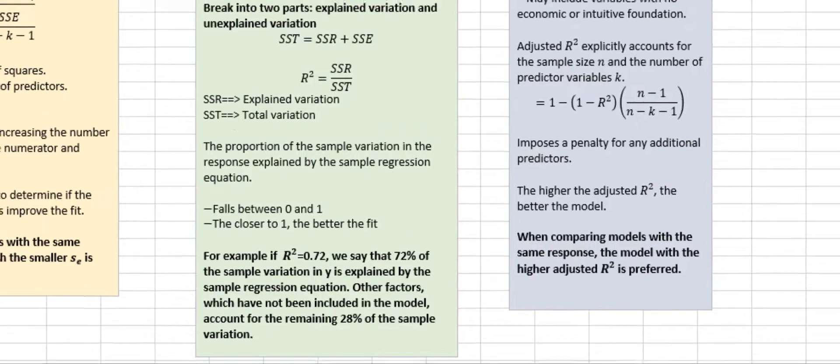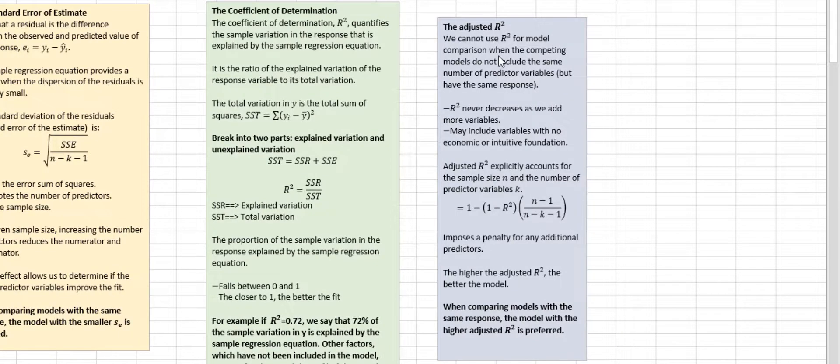And finally, I want to talk about adjusted R square. The reason we have adjusted R square is because we cannot use R square for model comparison when the competing models do not include the same number of predictor variables, but also have the same response variable. R square never decreases as we add more variables.